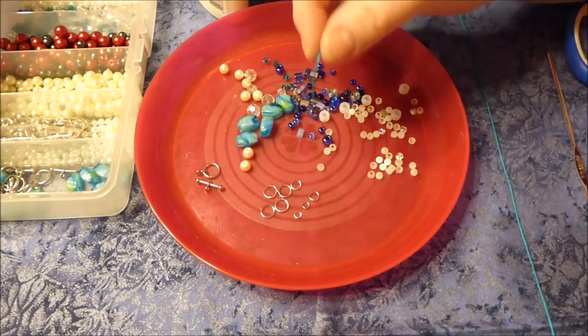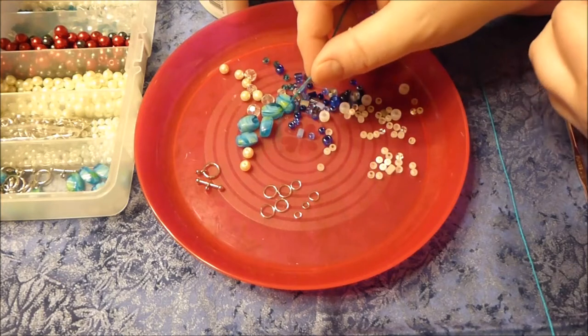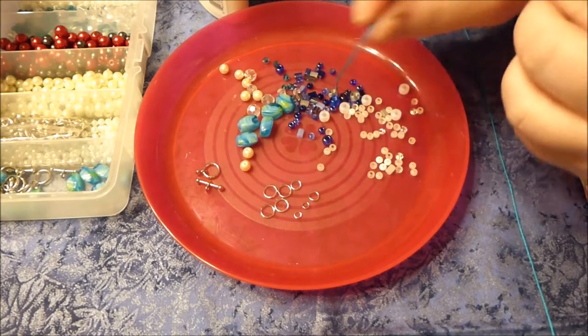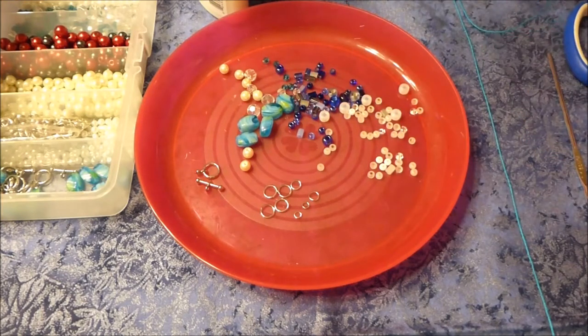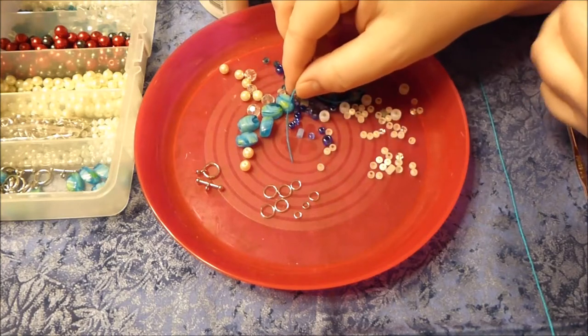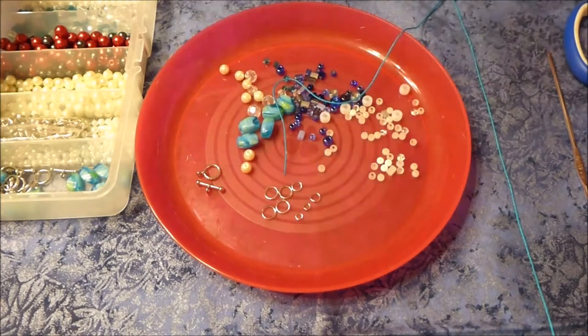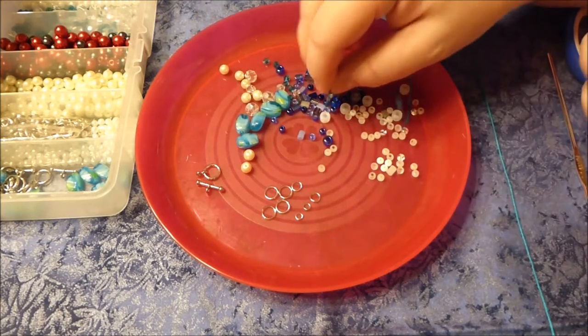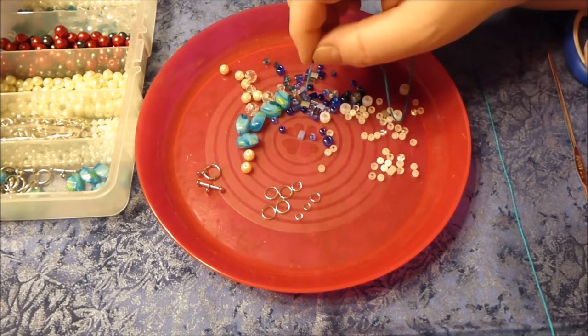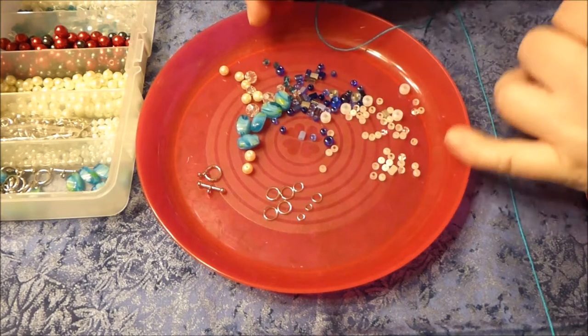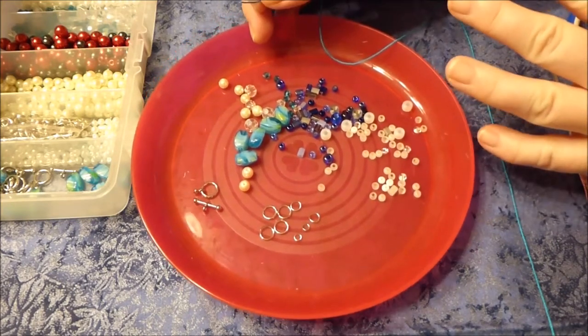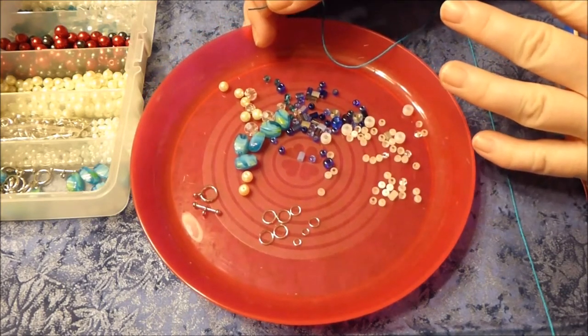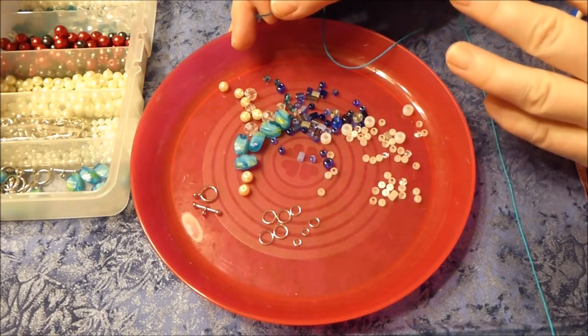I like to take some school glue or fingernail polish and the end that we will be stringing our beads onto, I will coat that with a little bit of the school glue or the nail polish and I will let it dry. That makes it stiff and easy for the bead to go onto without having to use a needle. If you want to have a pattern to your necklace, then certainly set out your beads in the pattern and string in that order.